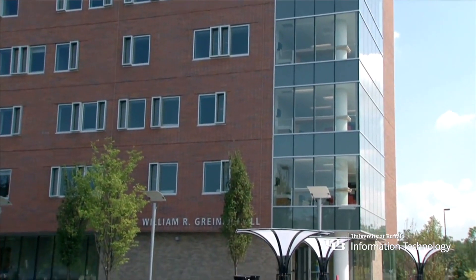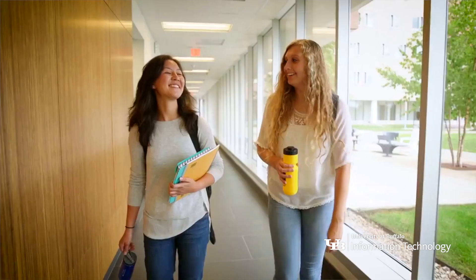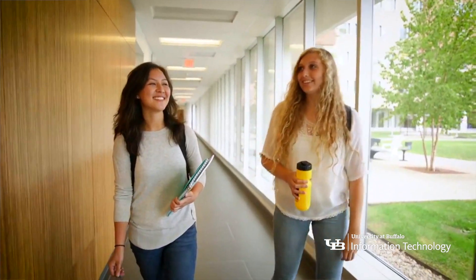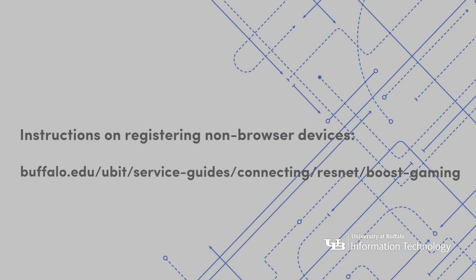If you're living in UB's Res Halls or on-campus apartments, you can connect your devices to the high-speed ResNet wired network. These instructions are for connecting and registering devices with web browsers. If your device doesn't have a web browser, like some smart TVs and gaming consoles, these instructions won't be relevant. Visit the UBIT website for instructions on how to register these devices.